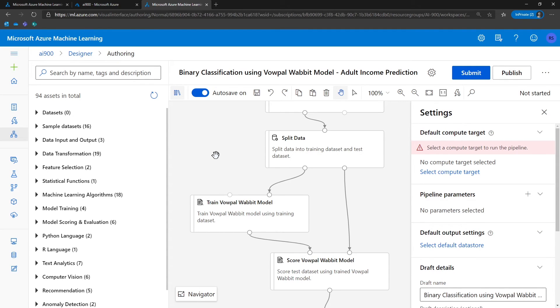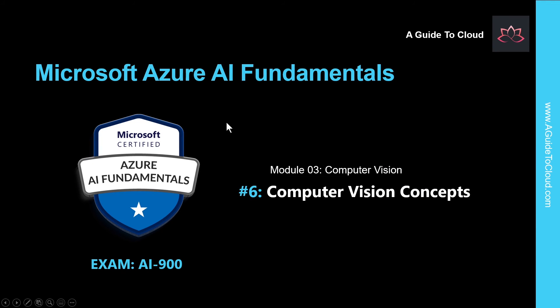Since this is AI-900, which is Fundamentals of Artificial Intelligence, theoretical knowledge around what this is and what the use case scenarios are is all you need for this examination. That concludes Module 2, which was all about machine learning. In the next video, we're going to start a brand new module, which is all about computer vision. The first lesson we're going to learn is computer vision concepts. I will see you in the next one — till then, take care.